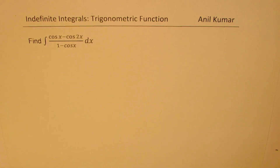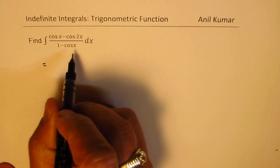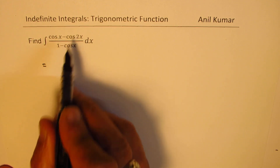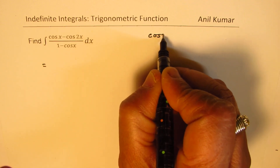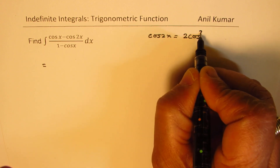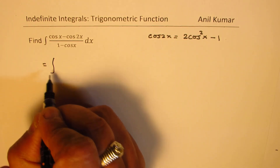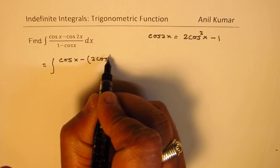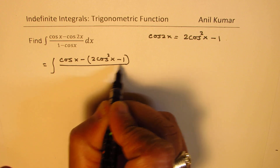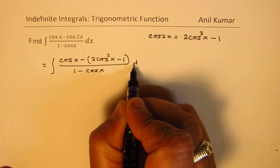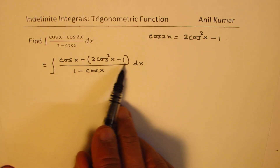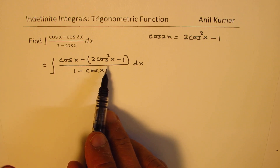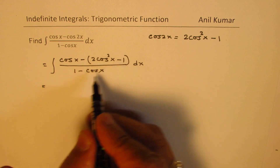Now let's take the last one: the integral of (cos x − cos 2x) over (1 − cos x) dx. Cos 2x can be written in terms of cos x using the formula cos 2x = 2 cos squared x minus 1. So we write this as the integral of cos x minus (2 cos squared x minus 1) over (1 − cos x) dx. We see a quadratic expression in the numerator that we can factor, allowing us to cancel terms.